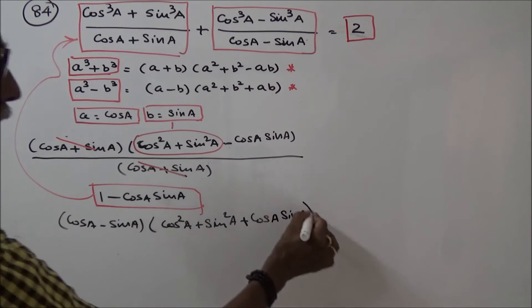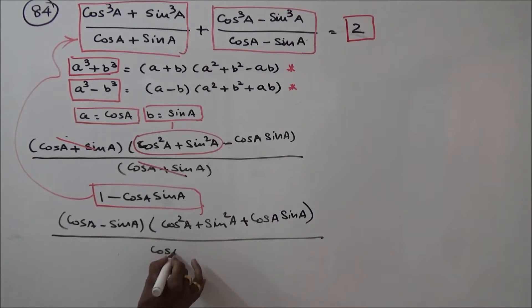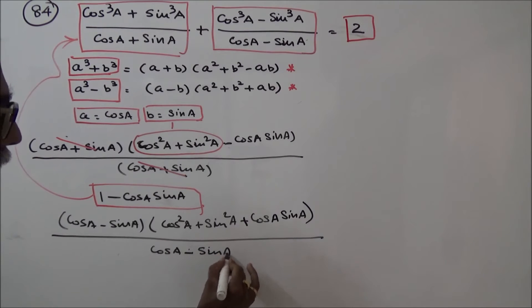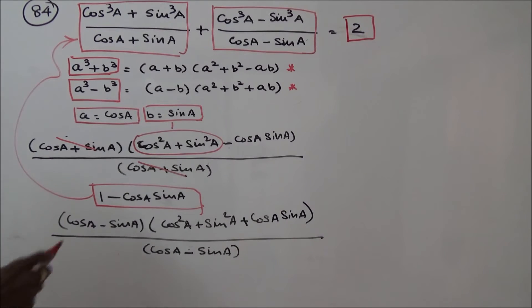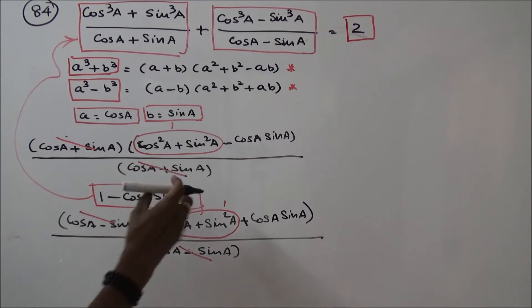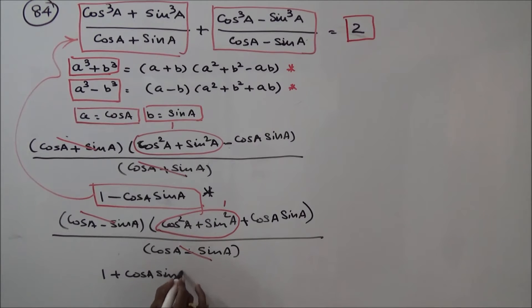Divided by (cosA minus sinA). These two terms cancel. Since cos²A plus sin²A equals 1, the second part becomes 1 minus cosA·sinA.